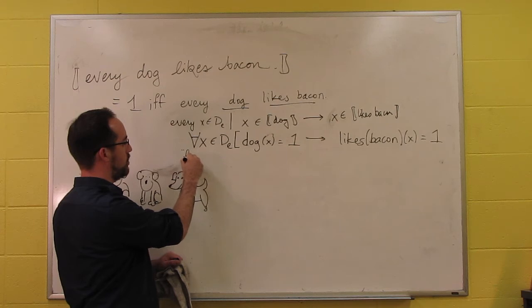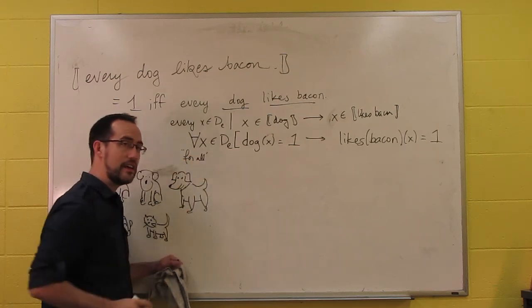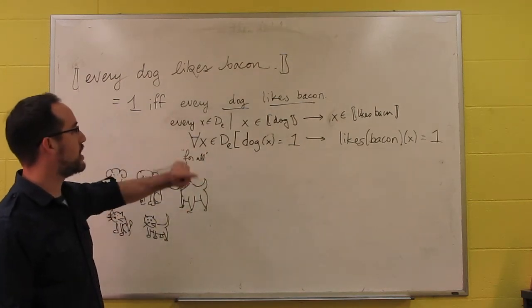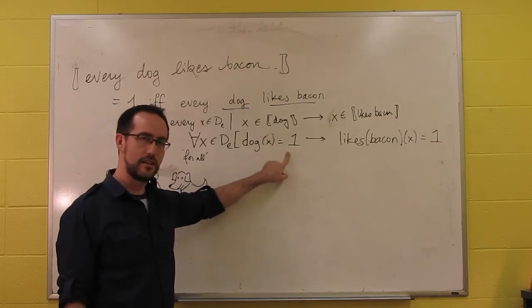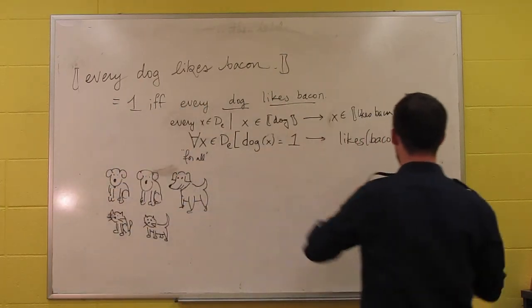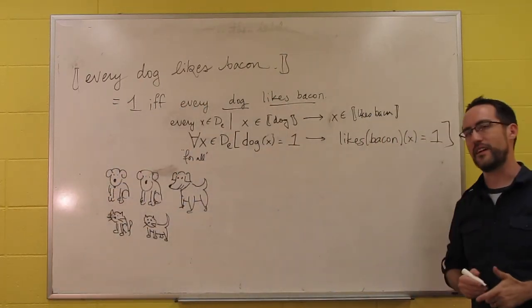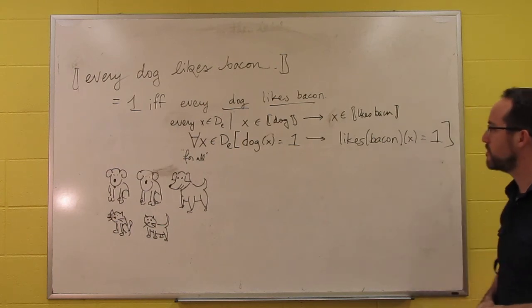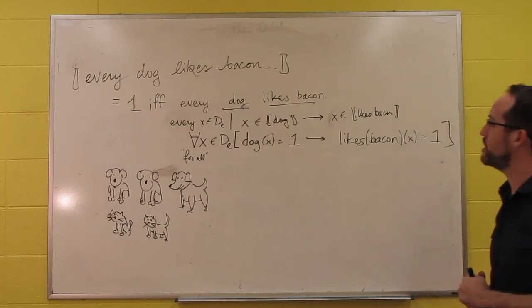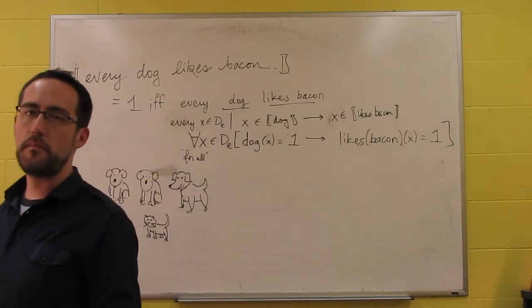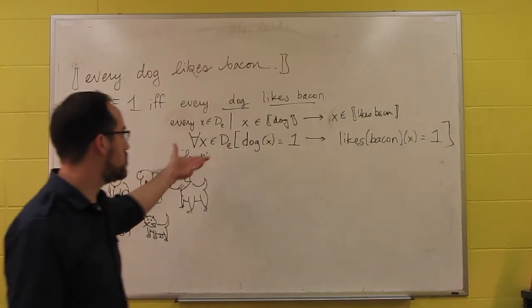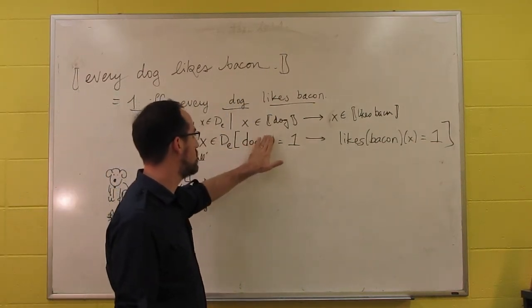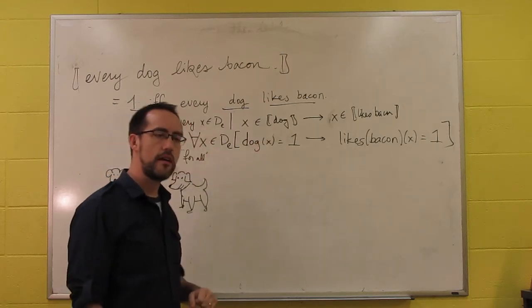And we read it as for all, or for any. For all X in g sub e, if X is a dog, then X likes bacon. That's what our sentence will mean. Now we just have to work our way back through the functions to get to the meaning for every.